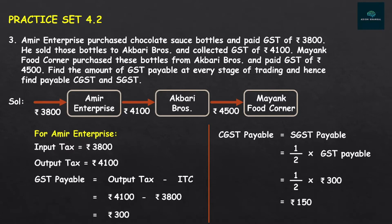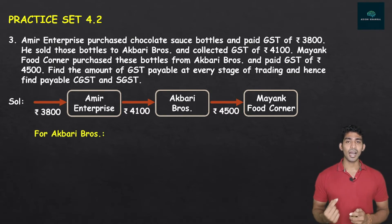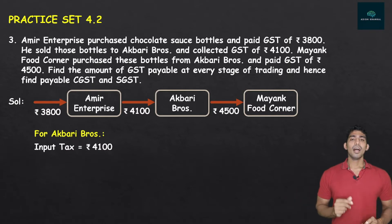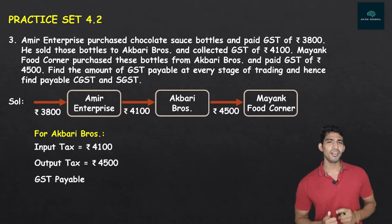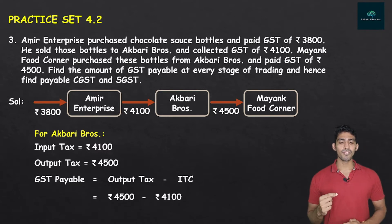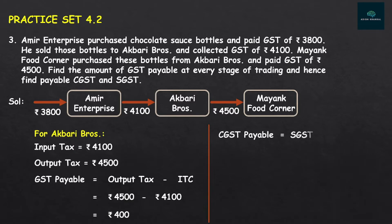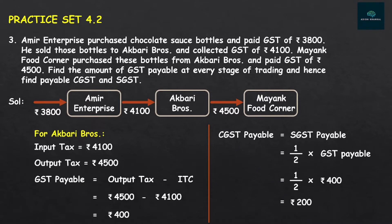Now, at every stage of trading, we also need to find GST Payable for Akbari Brothers. This time, the input tax is Rs. 4,100 and the output tax is Rs. 4,500. GST Payable = 4,500 minus 4,100 = Rs. 400. CGST and SGST payable are each half of 400, which is Rs. 200 each. Akbari Brothers' GST Payable, CGST Payable, and SGST Payable are all found.